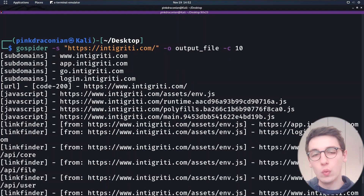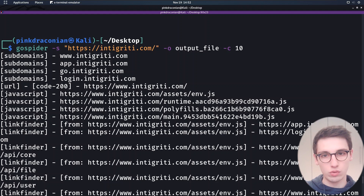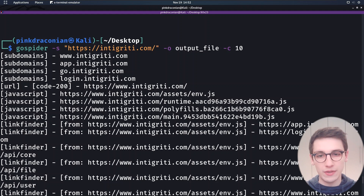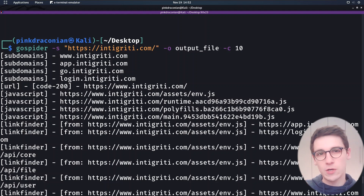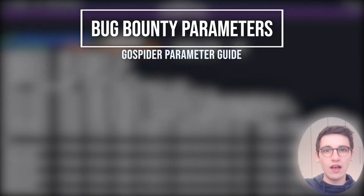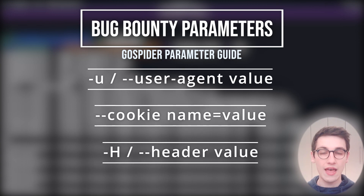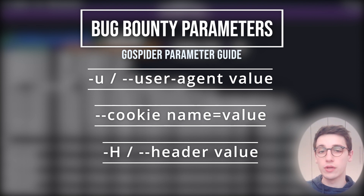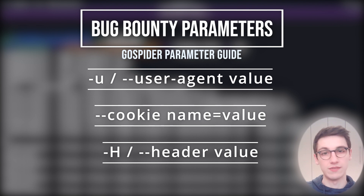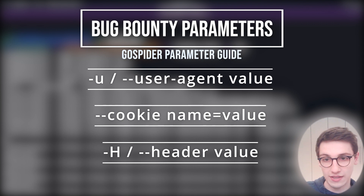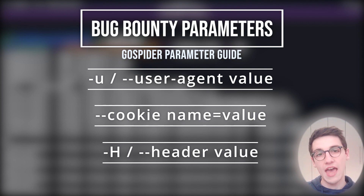With that simple scan out of the way, we can also look at some more features this tool has — there are plenty more we can use. First, I want to talk about some bug bounty parameters. For example, your platform may require you to set a user agent to your integrity email address. You can do that with "-u" or "--user-agent". We can also set specific cookies with "--cookie" and specific headers with "-H" or "--header".